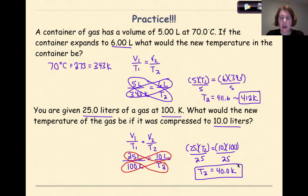So again, let's look at our answer and see how it compares. So 25 liters to 10 liters, that means my volume is decreasing. Therefore, my temperature should also be decreasing. So 100 Kelvin to 40 Kelvin makes sense with my final answer.